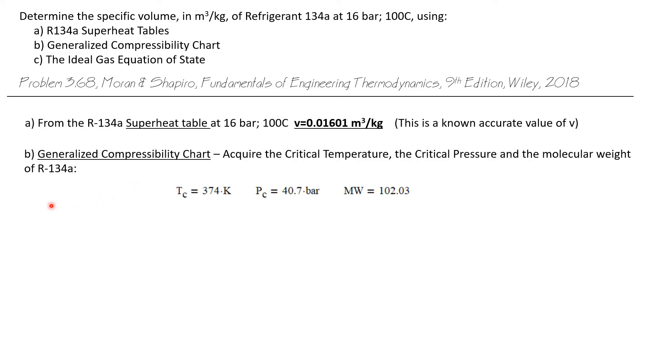Now the generalized compressibility chart, let me show you how to use that. Before we can use it, we need three values for our particular gas. We need the critical temperature, which is the temperature at the critical point. We need the critical pressure, which is the pressure at the critical point, and we need its molecular weight.